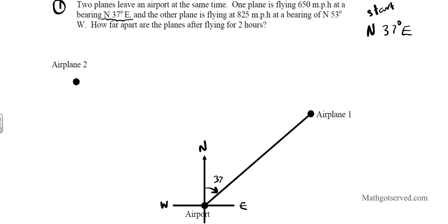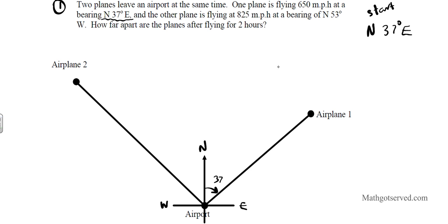The second bearing for plane number 2, starting from the airport again, is 53 degrees west of north. In this case we are going to start facing the north and then rotate towards the west, which is a counterclockwise rotation. The path that the plane flew from the airport — the heading of the plane was 53 degrees west of north. So we start facing north and then rotate 53 degrees towards the west. So this is 37 degrees and this is 53 degrees. The angle of separation between these two planes is simply the sum: 53 plus 37 is 90 degrees.